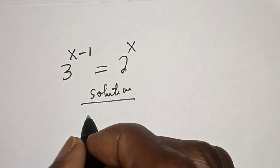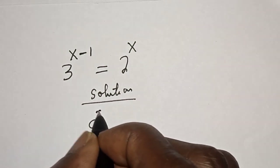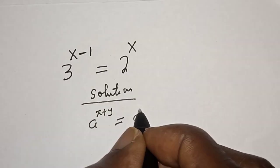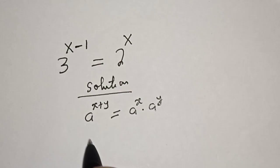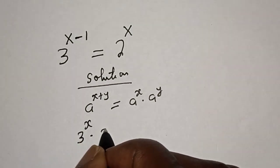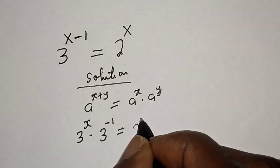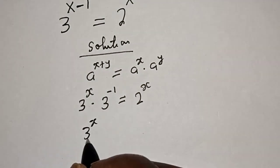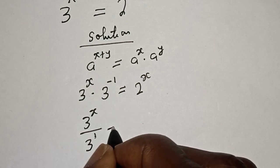Take note of this rule: a raised to power s plus y is equal to a raised to power s multiplied by a raised to power y. Then this can be written as 3 raised to power s multiplied by 3 raised to power minus 1, is equal to 2 raised to power s.